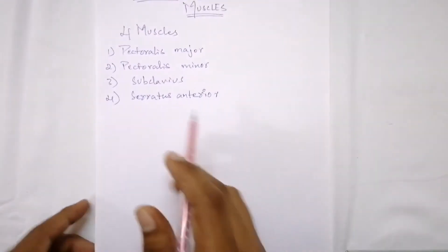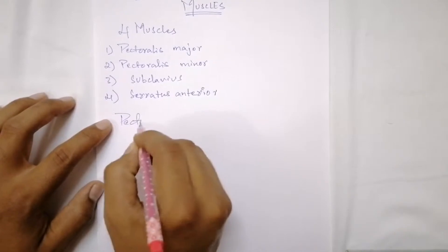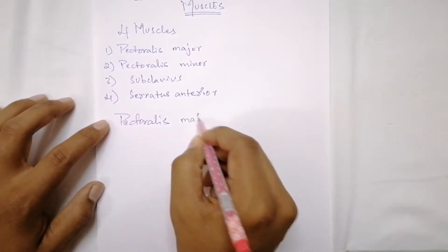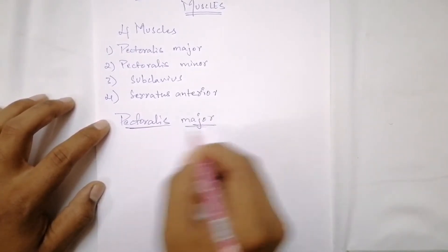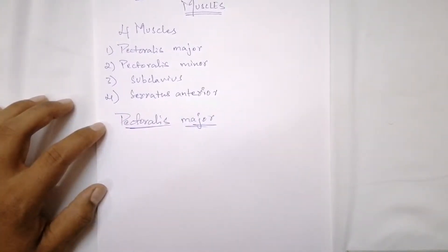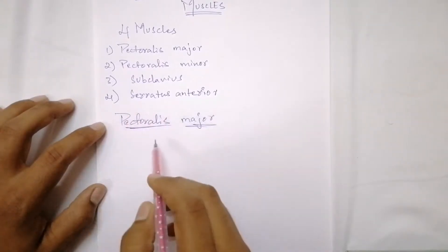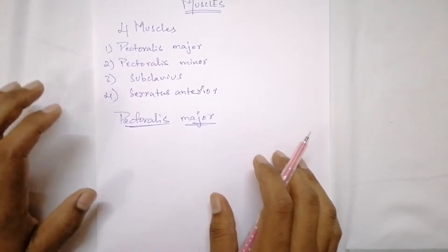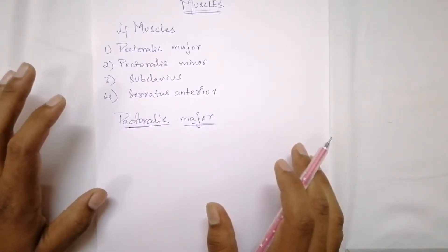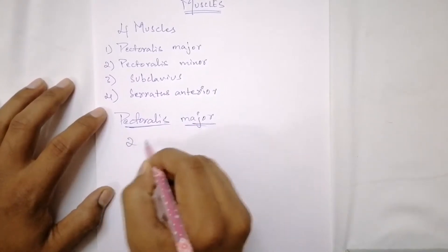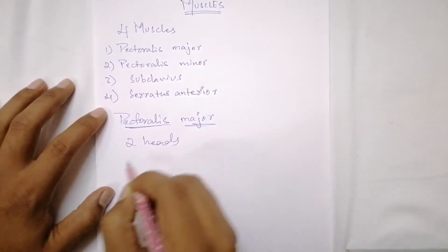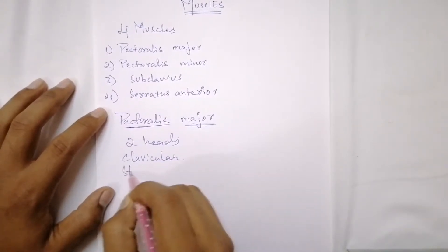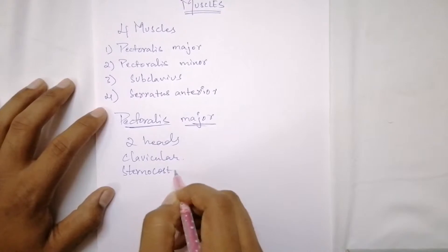Let's look into the pectoralis major muscle. By the name, 'major' indicates it's a big muscle, and 'pectoralis' indicates it's on the pectoral region, just below the neck. Pectoralis major is a large fan-shaped muscle which covers the superior part of the thorax. It has two heads: the clavicular head and the sternocostal head.